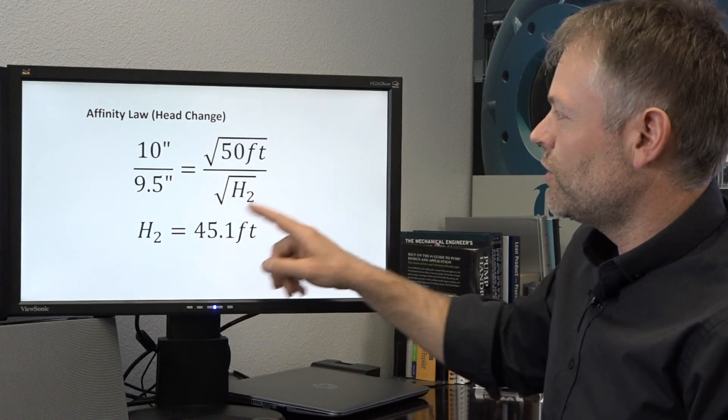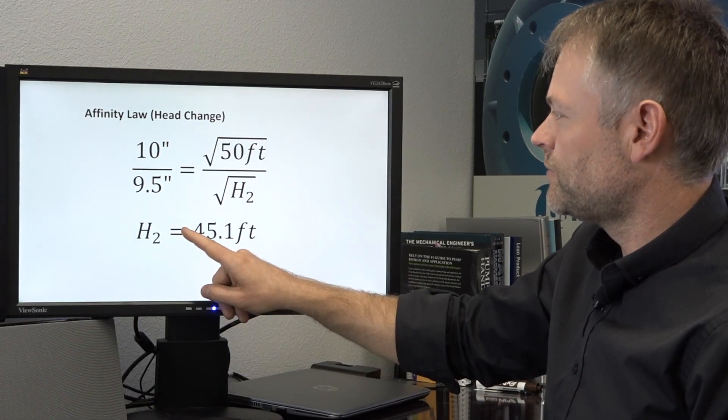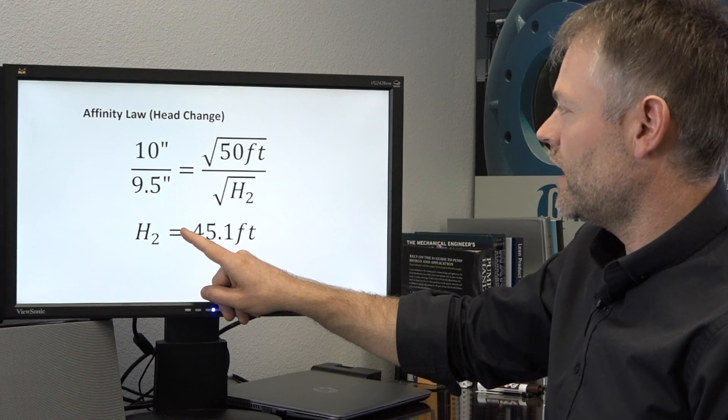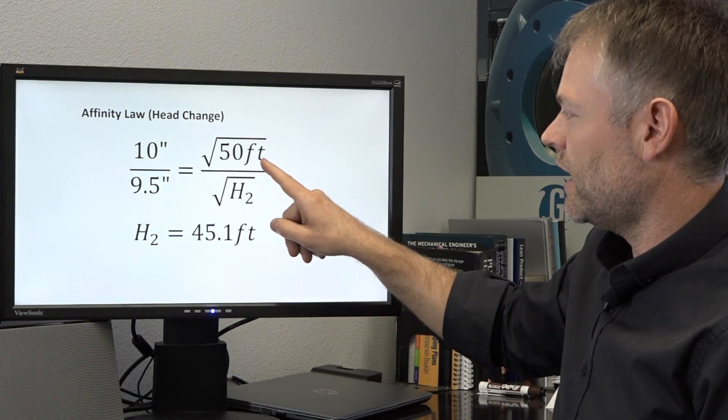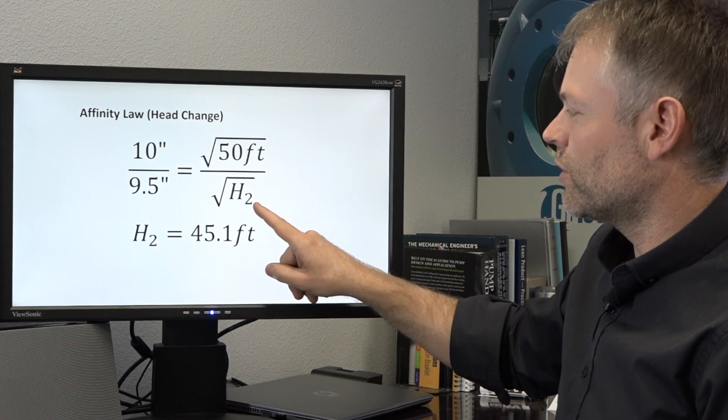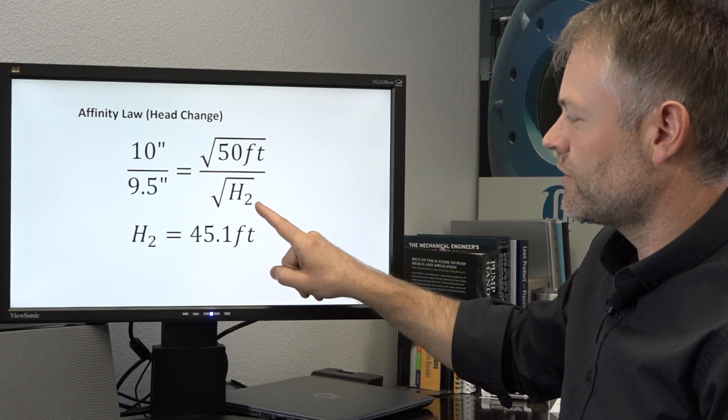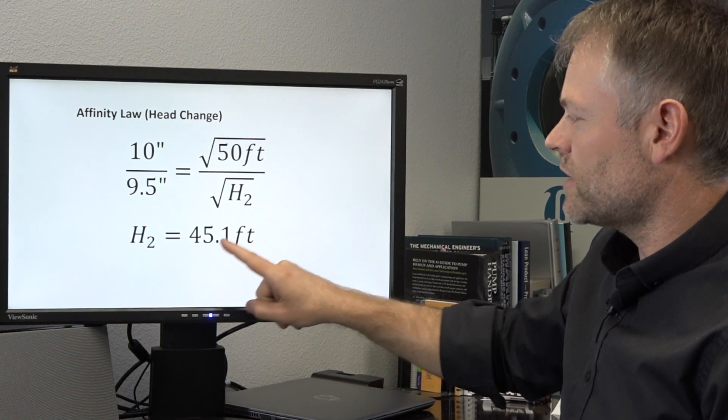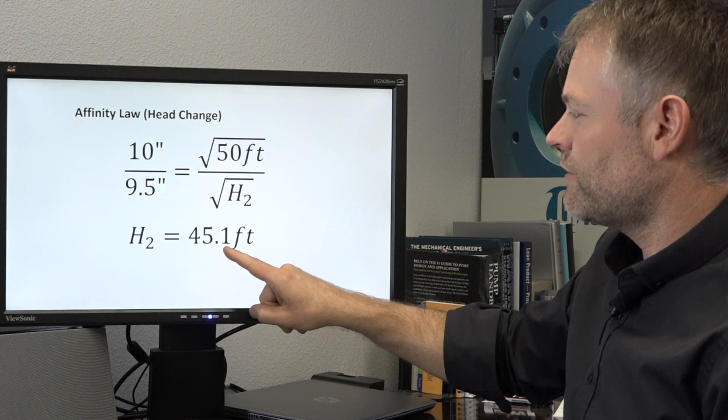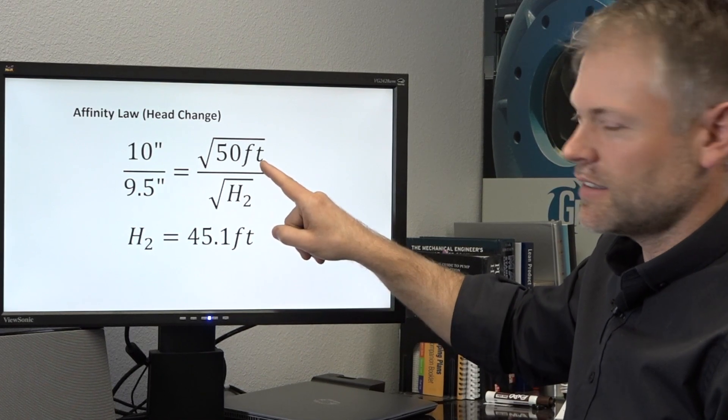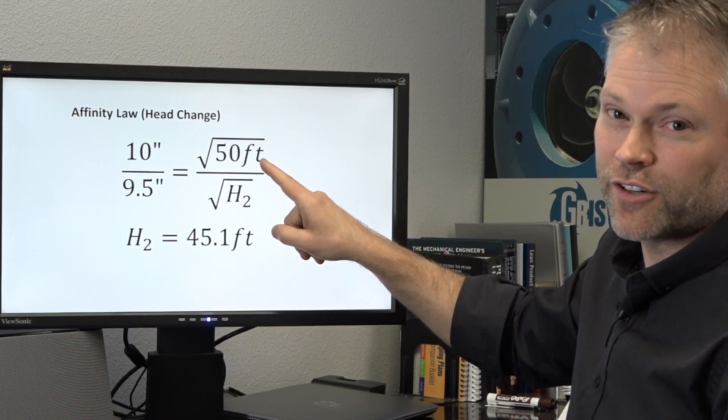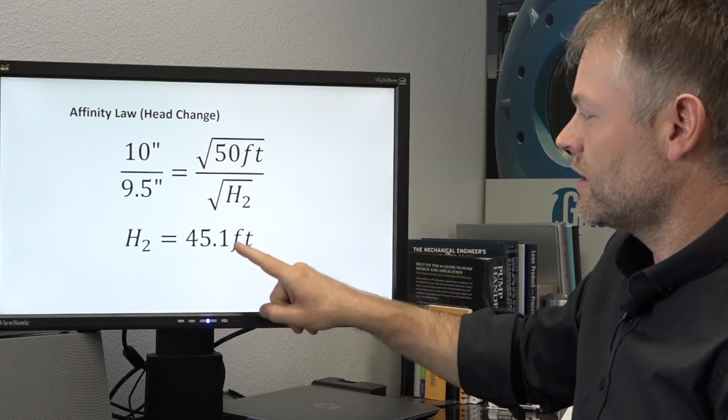We can now go to the head portion of the equation and here we can take our original head and calculate for our estimated future head and that comes out at 45.1 feet. So in this instance, the head pressure is going to drop from 50 to 45.